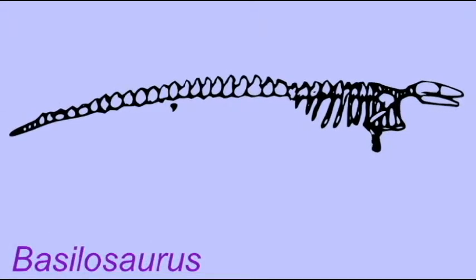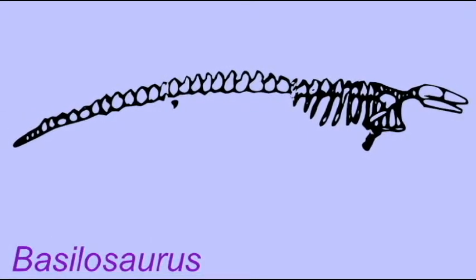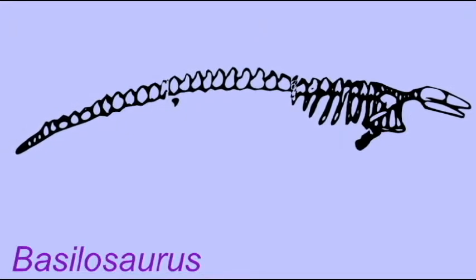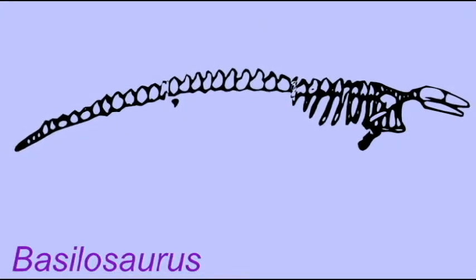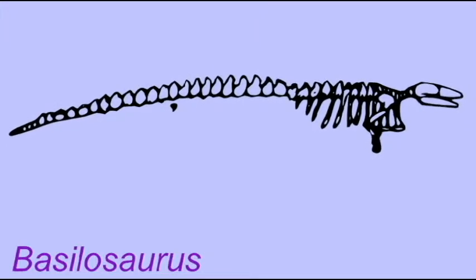Basilosaurus was the largest of the Eocene whales, measuring more than 20 meters. It possessed sharp teeth in its jaws and would have been the top predator in its day.